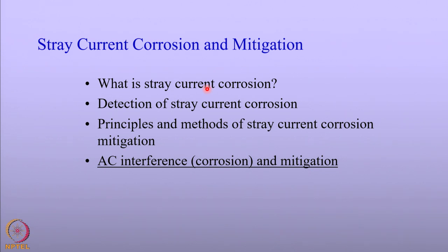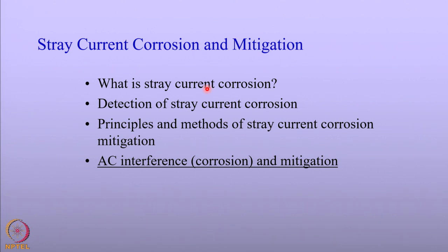We have seen earlier when we talked about the external corrosion of buried structures, stray current corrosion is one of the main problems that affects the structural integrity of these pipelines and storage tanks. Stray current corrosion is also an important problem in offshore structures. We will look at what stray current corrosion means in detail, and then how to detect it in these structures.